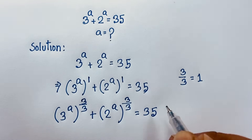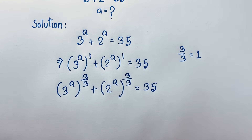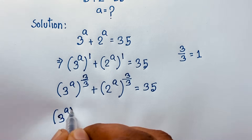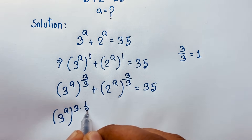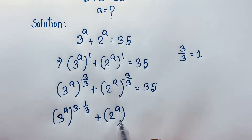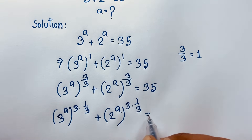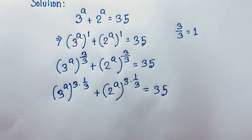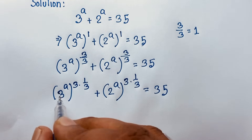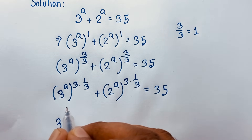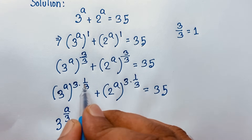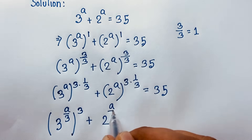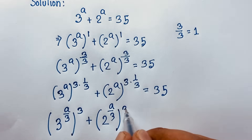Evaluating that fraction, we get 3 to the power a times 3 times 1 over 3, plus 2 to the power a times 3 times 1 over 3, equals 35. Using the exponential rule, this becomes 3 to the power (a over 3), whole cubed, plus 2 to the power (a over 3), whole cubed, equals 35.